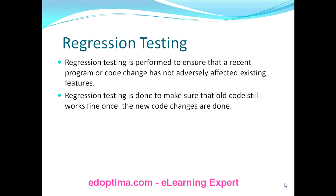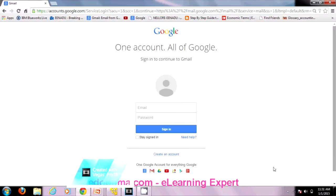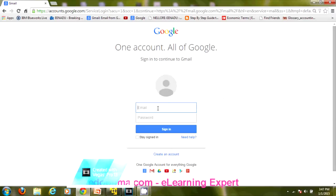We need to make sure that existing functionality should not get affected. For better understanding, I will take an example and explain how we need to do regression testing and what kind of test cases we need to select. I will take Gmail as an example.